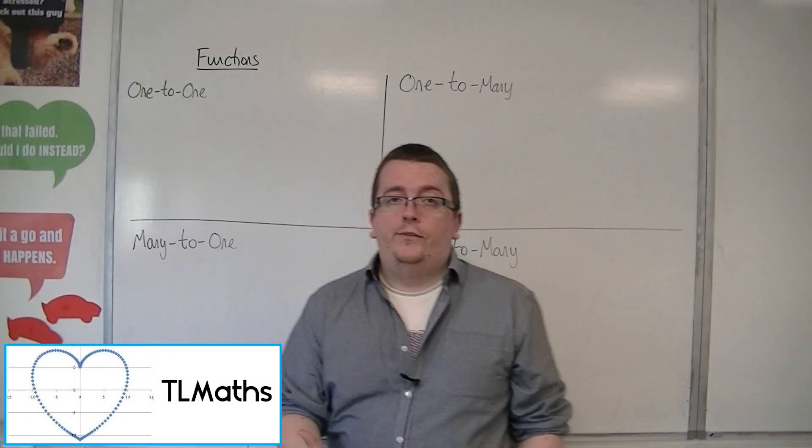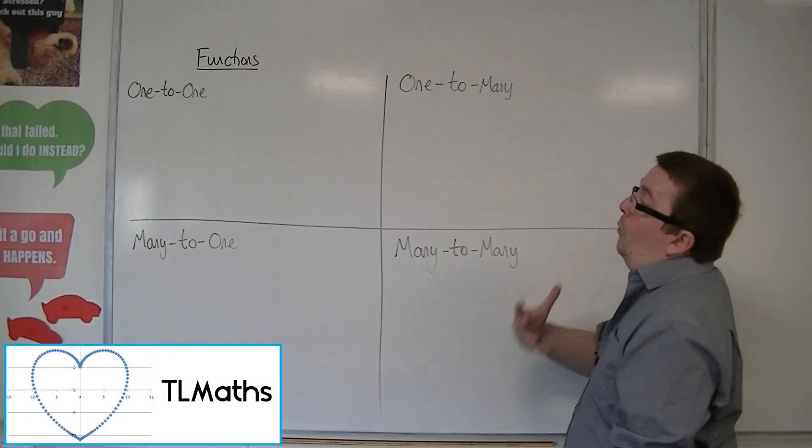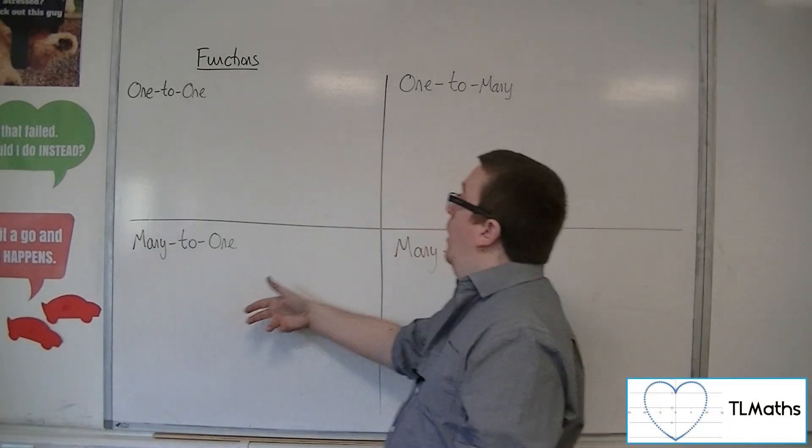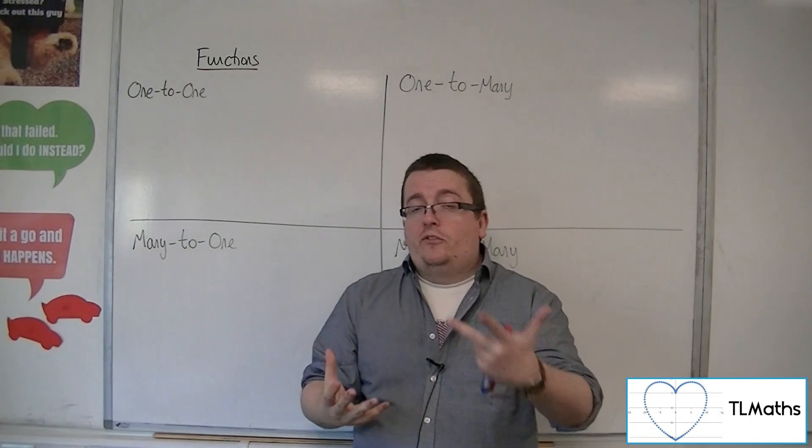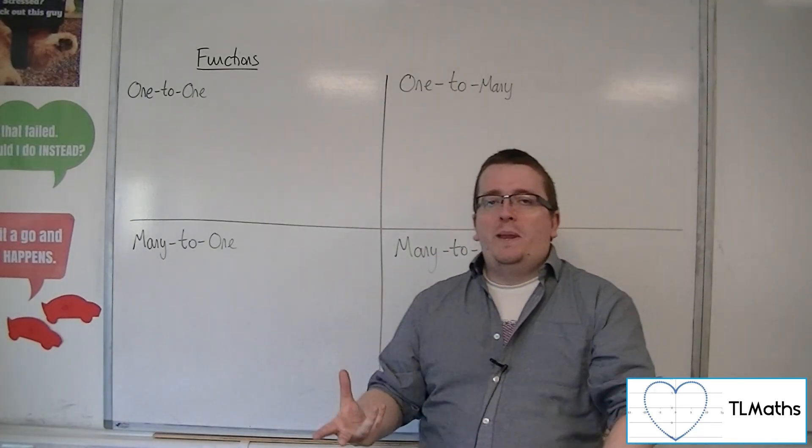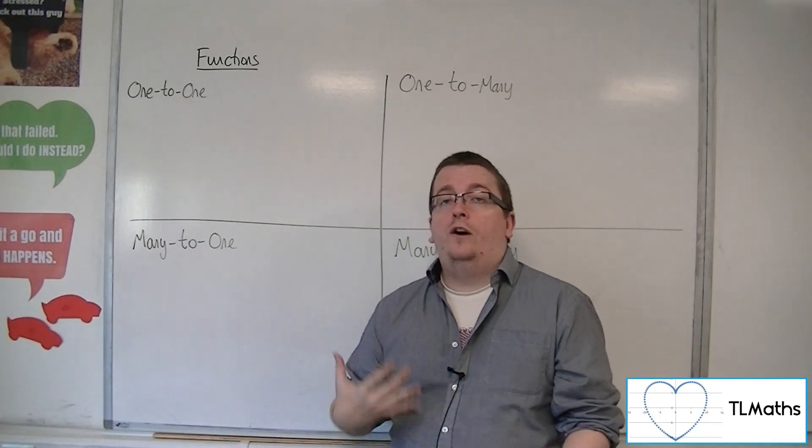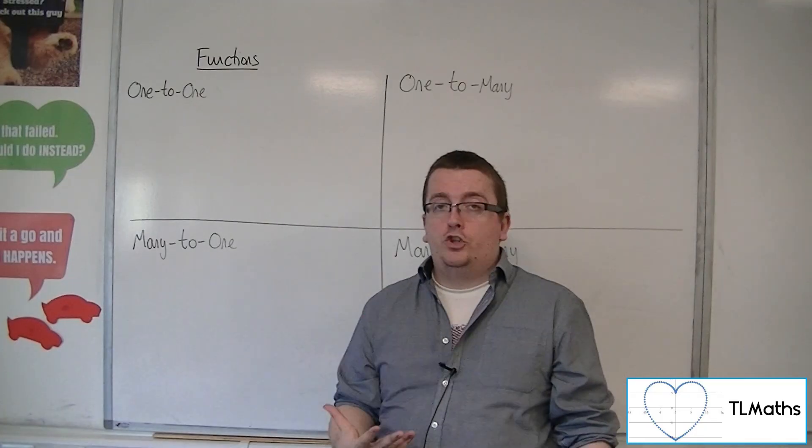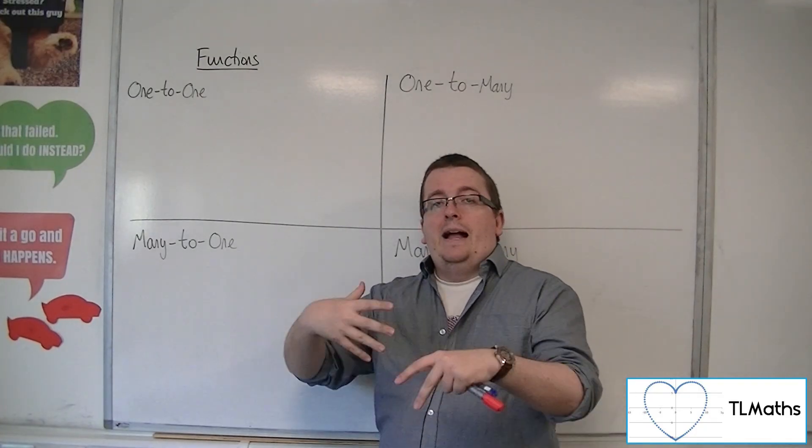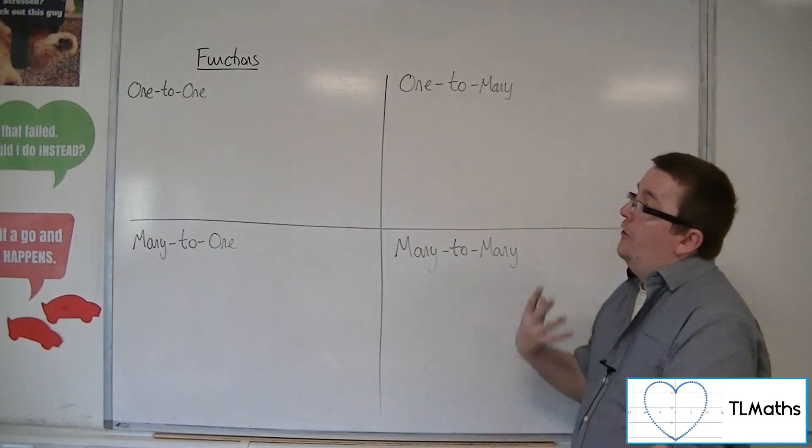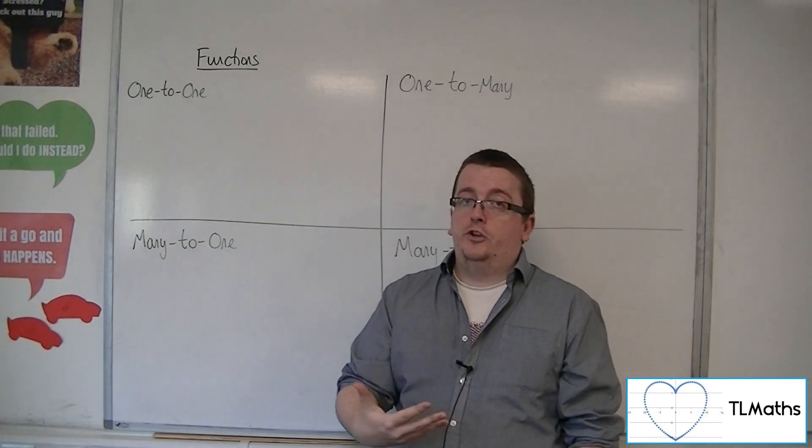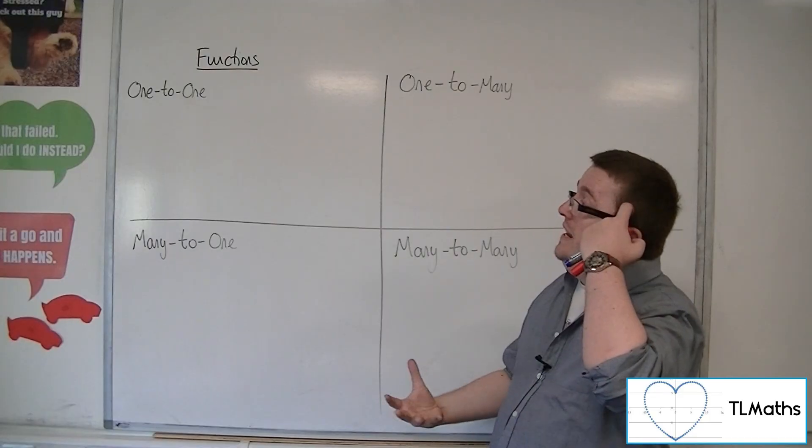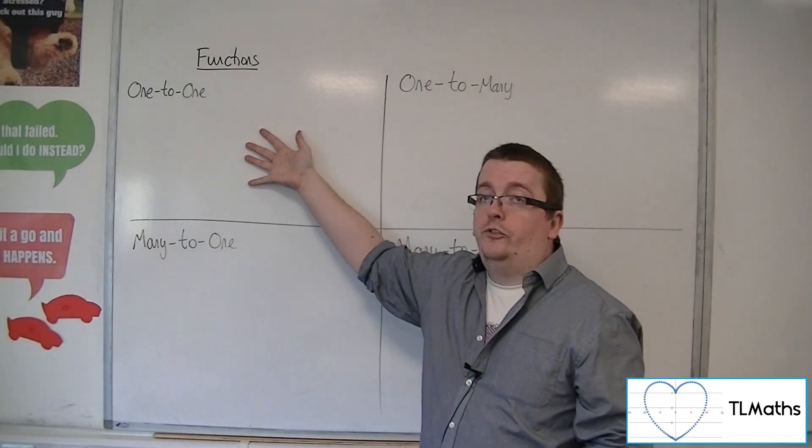When we're talking about graphs, we need to consider whether they're one-to-one, many-to-one, one-to-many, or many-to-many. The main reason for doing this is we need to be able to identify whether a graph actually represents a function or not, and when we are looking at functions, we may want to find an inverse function, in which case we need to make sure the graph is one-to-one.